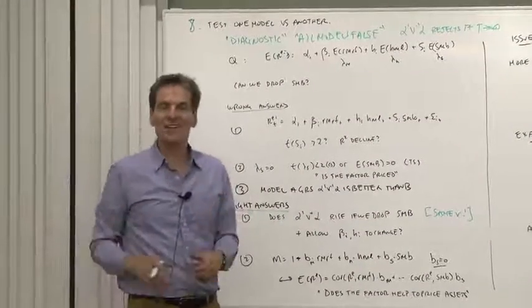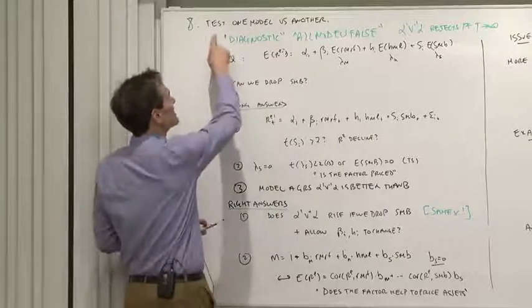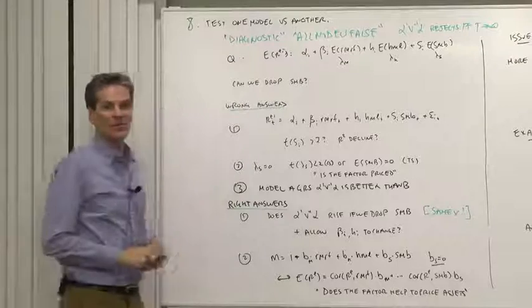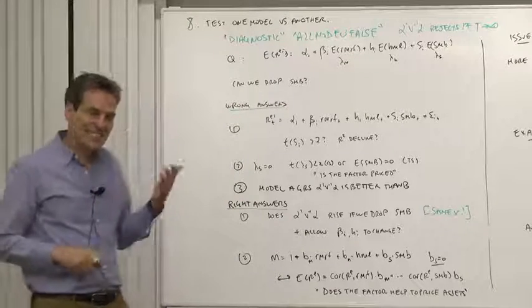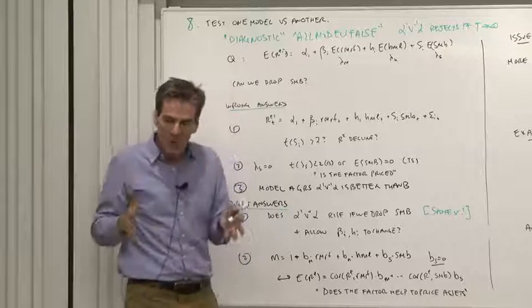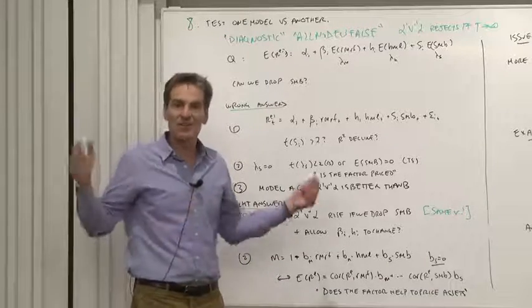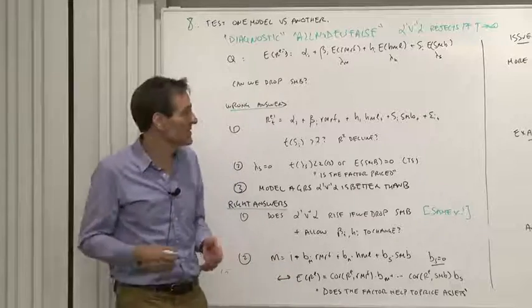Part of the diagnostic or search that we do for good models is testing one model versus another. Now this doesn't exist in the standard statistical philosophy where you have one model, you test it for absolute truth in the data, you reject it or don't, and then you need to go find new data. That's not how we do things.